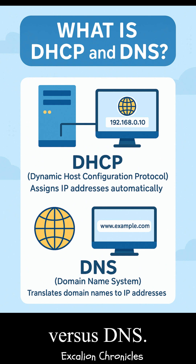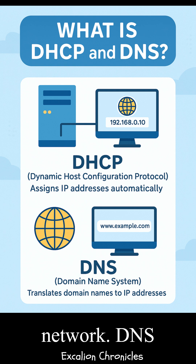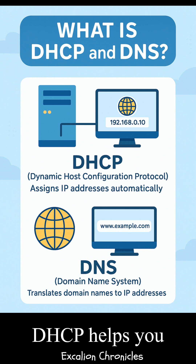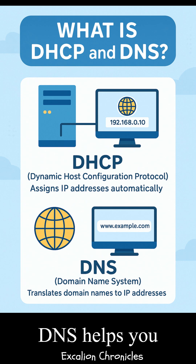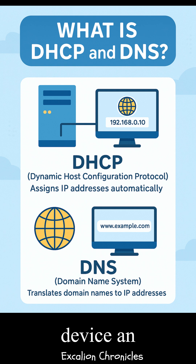DHCP versus DNS — what's the difference? Let's keep it simple. DHCP gives your device an IP address automatically when you connect to a network. DNS translates website names into IP addresses so you can actually visit them. They work together: DHCP helps you get online, and DNS helps you navigate the Internet once you're there. So next time your Internet magically connects and loads your favorite site, just remember — DHCP gave your device an address, and DNS helped define the destination.